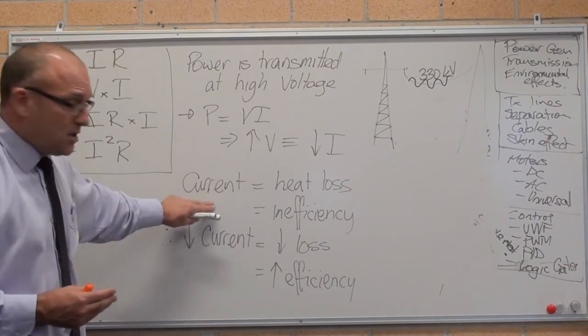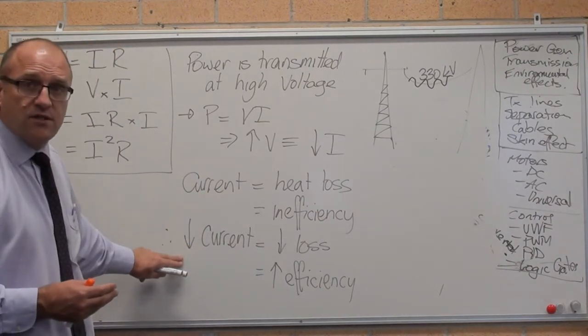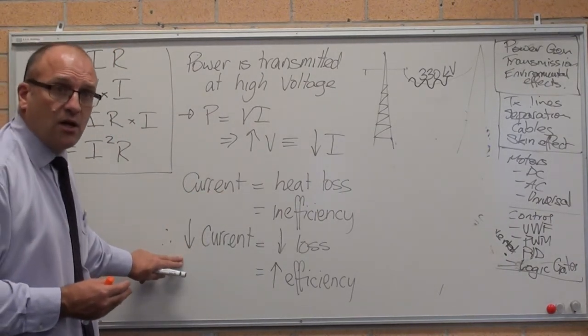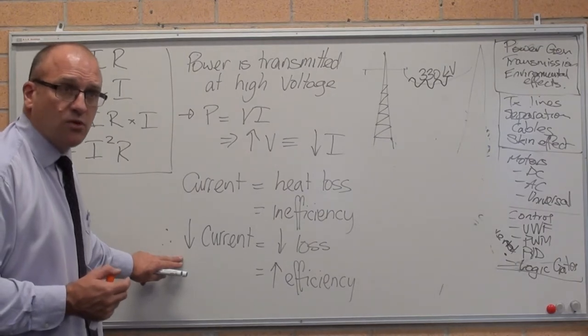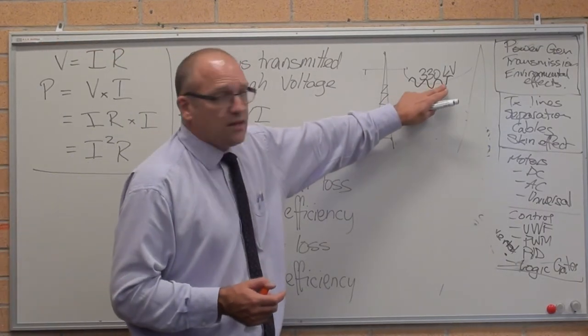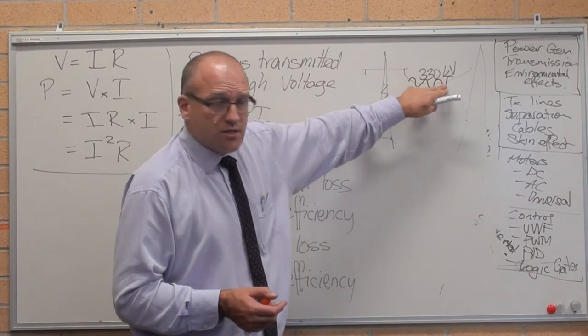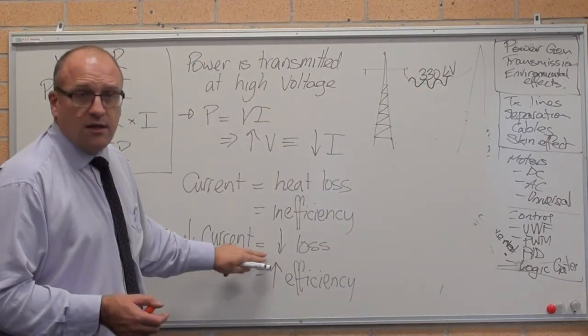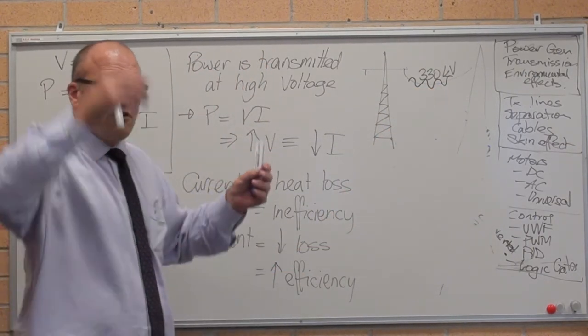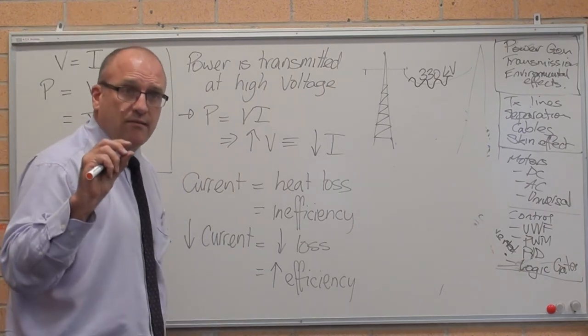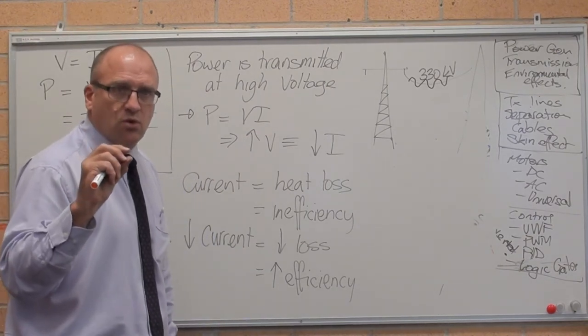So current's the heat loss. If you send power down lines at maximum possible voltage, like 330,000 volts, as the big ones, then you decrease the loss because it's incredibly high voltages and tiny currents. And the current's what causes the heat loss.